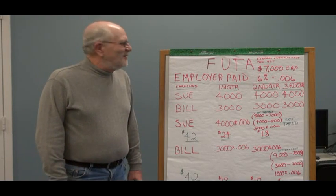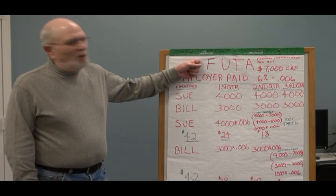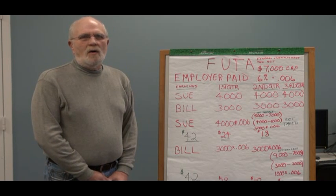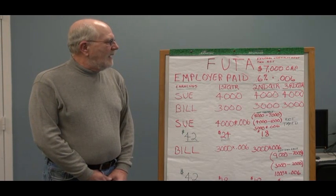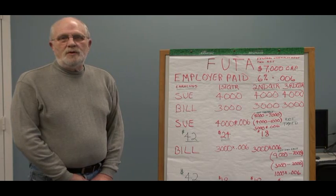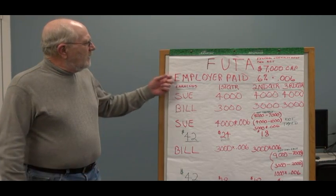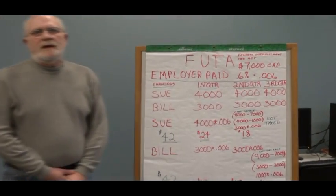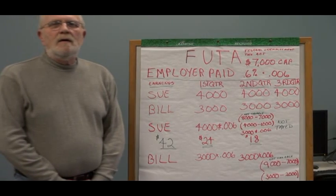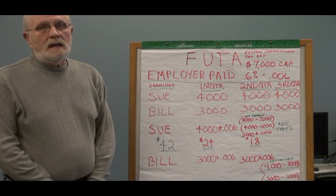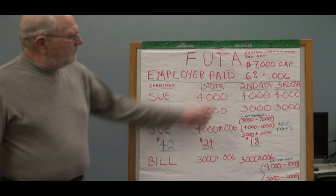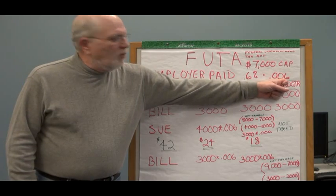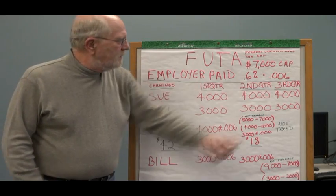Hello, folks. Today I'm going to talk to you a little bit about the Federal Unemployment Tax Act, or FUTA for short. There was a change in 2012 on the net FUTA rate, and that's the reason I'm doing a second film on FUTA. FUTA is an employer-paid tax, and since most employers get a 5.4% credit for paying state unemployment taxes, the net FUTA rate turns out to be 0.6%, which is the same as a multiplier of 0.006.